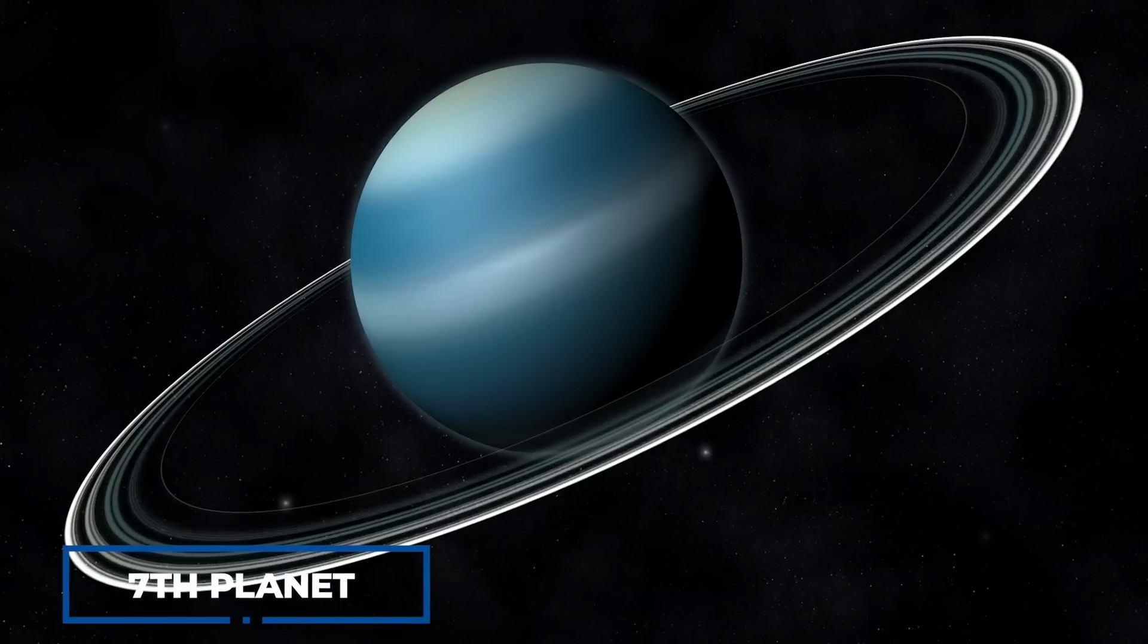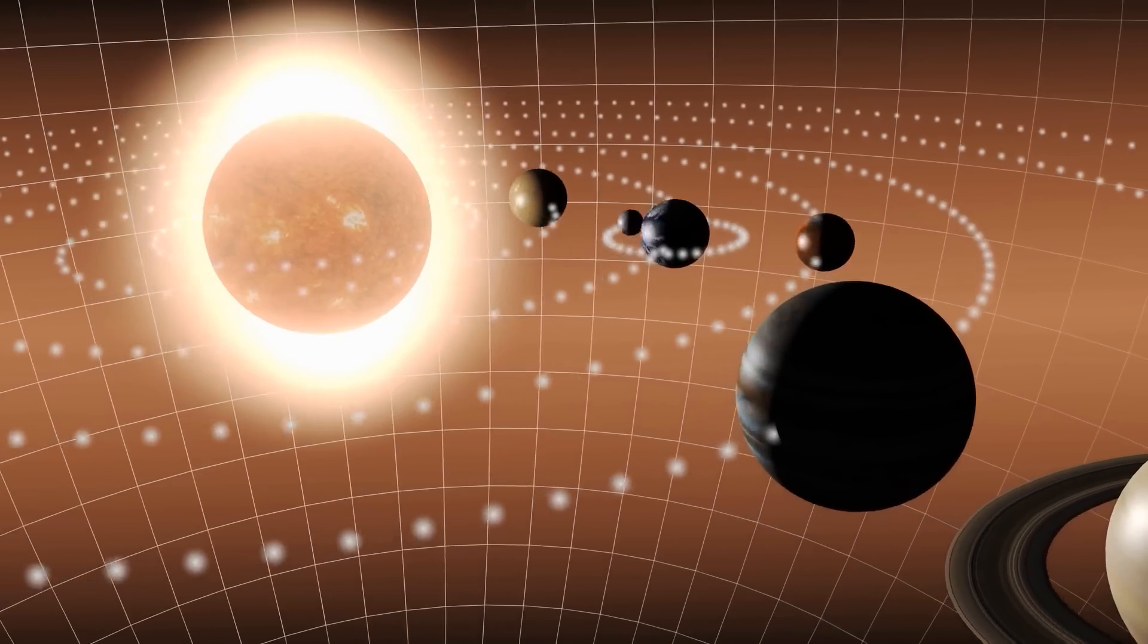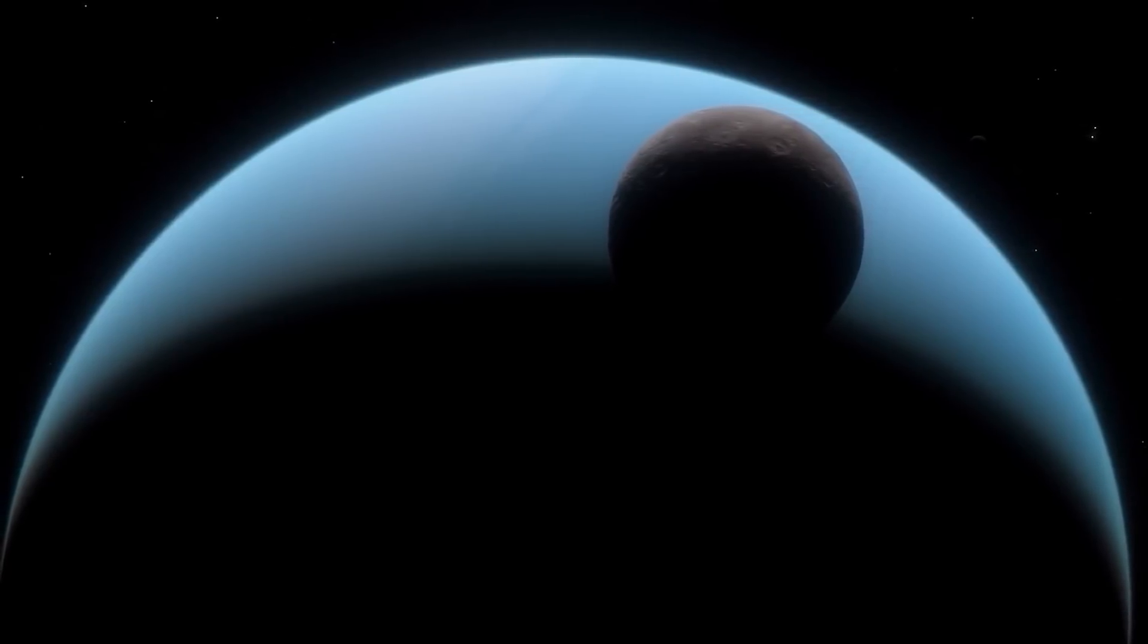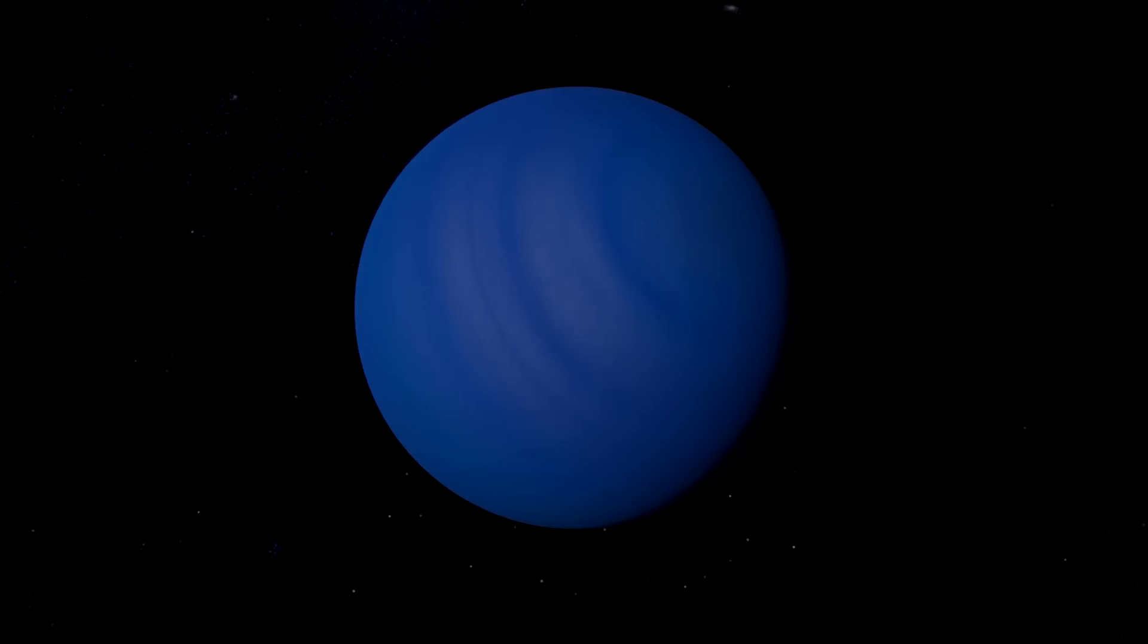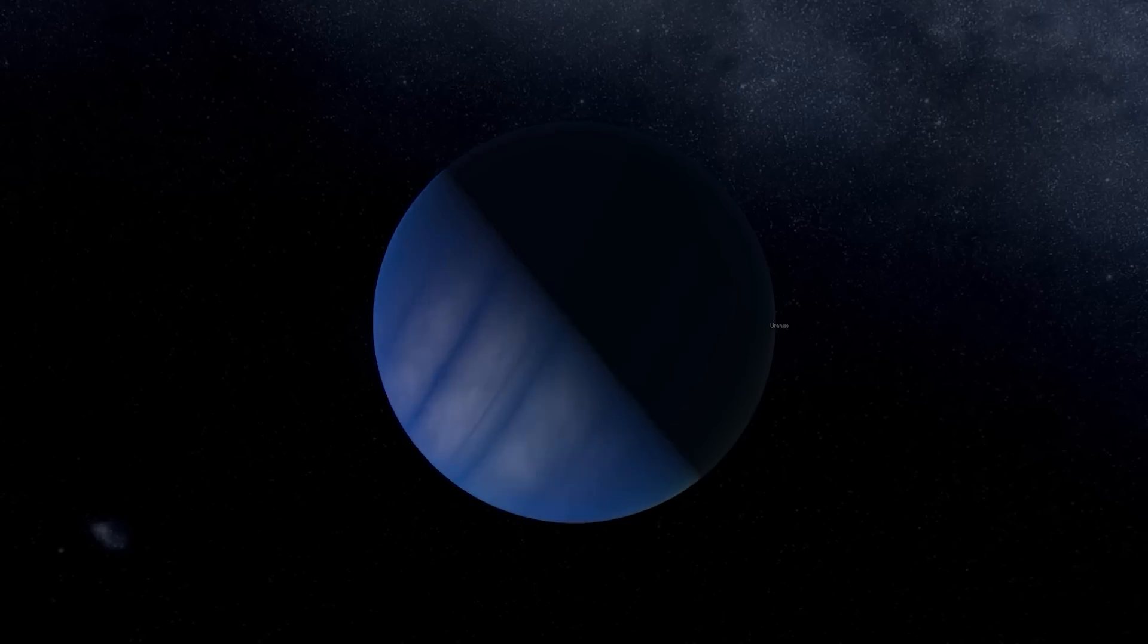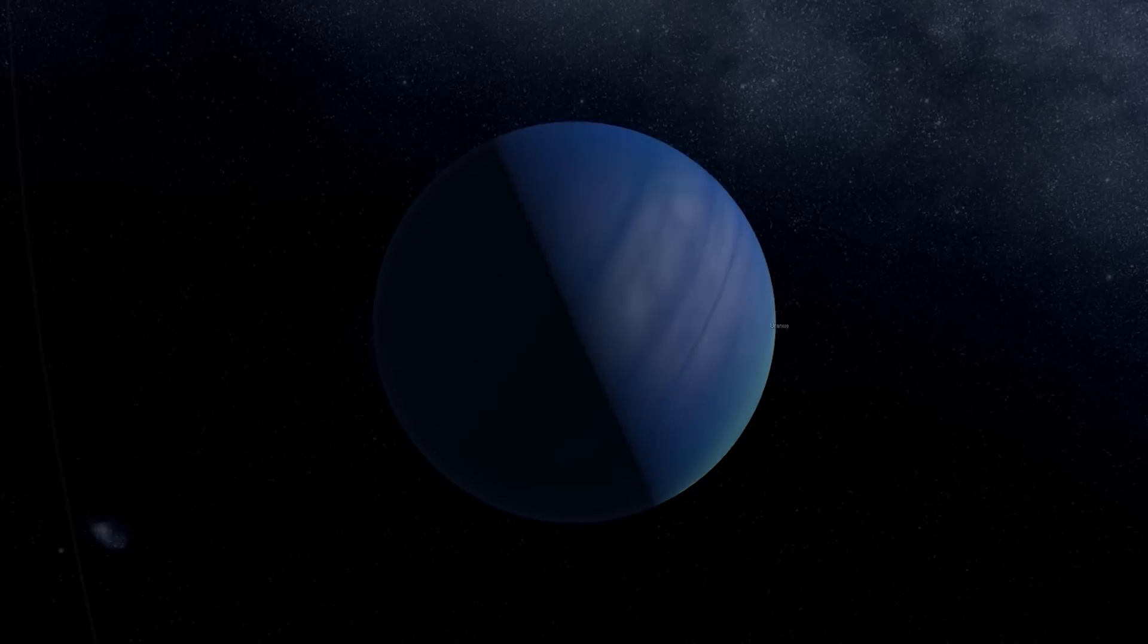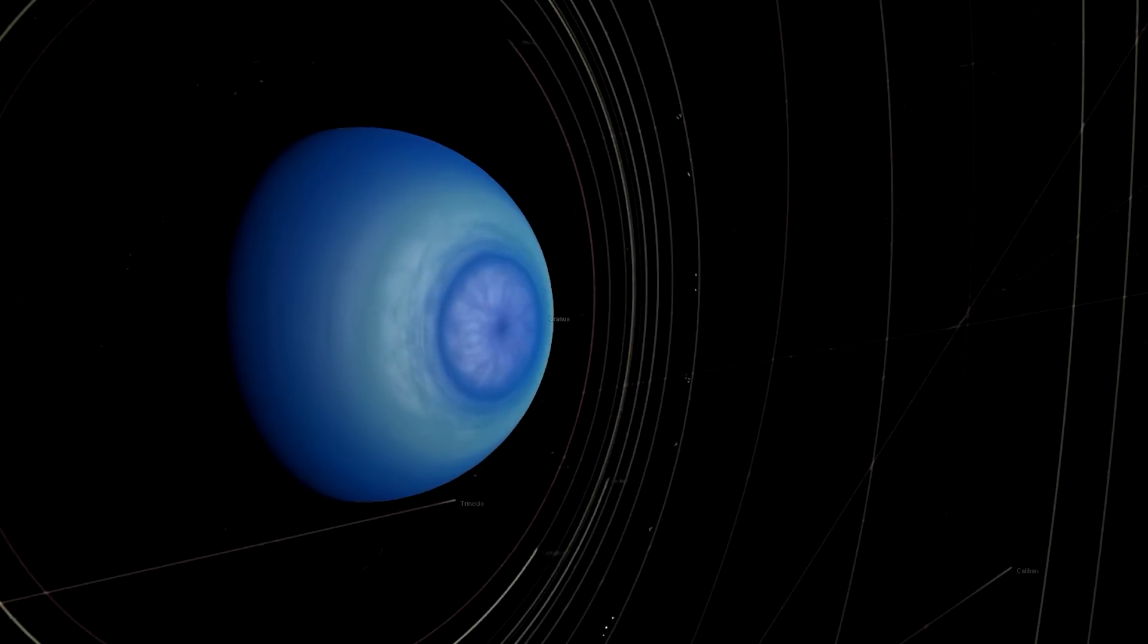The seventh planet from the Sun, Uranus, is one of the ice giants of our solar system, and it has a unique feature that sets it apart from the other planets. It rotates on its side. This unusual orientation results in extreme seasons that last for years, as its poles experience prolonged periods of sunlight and darkness.